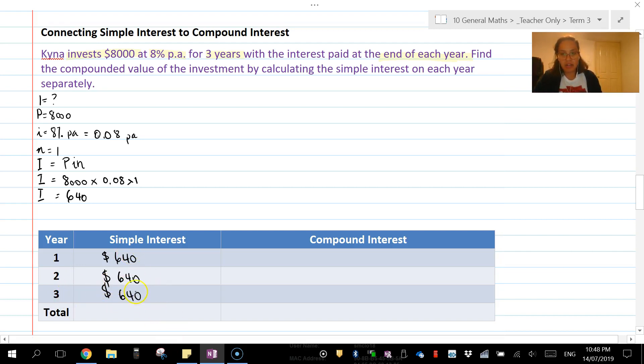The total is three times $640, so we add them together which gives us $1,920. Plus your $8,000 principal gives us a grand total of $9,920.